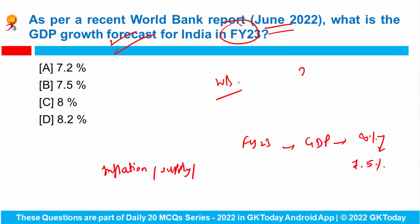The growth rate was revised to 2.9%, previously at 4.1%. So the correct answer is 7.5%.